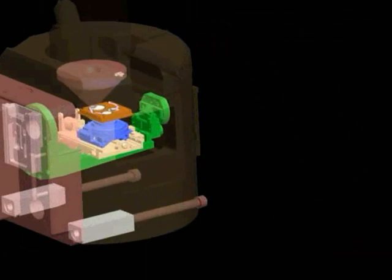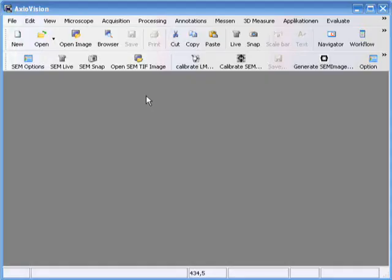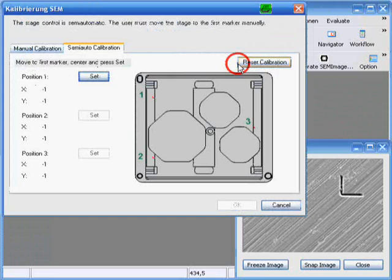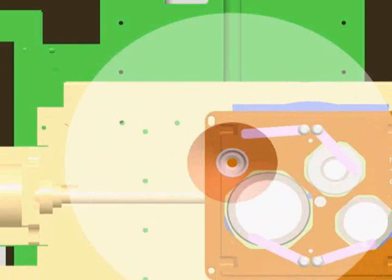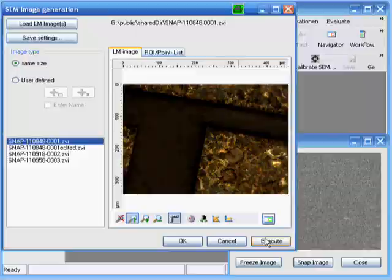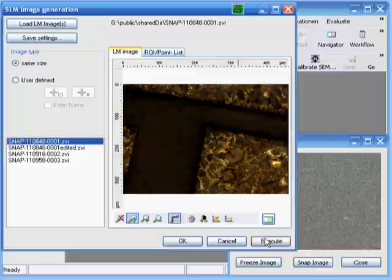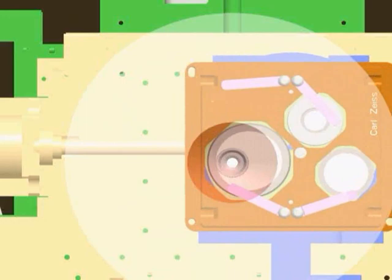This is followed by the same calibration procedure used for the light microscope. Shuttle and Find is based on the philosophy of maximum convenience and a consistent look and feel. The light microscope images are now loaded and previously stored regions of interest are relocated. Their size automatically defines the magnification of the electron microscope.